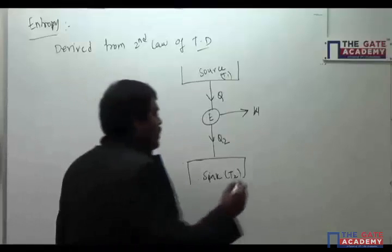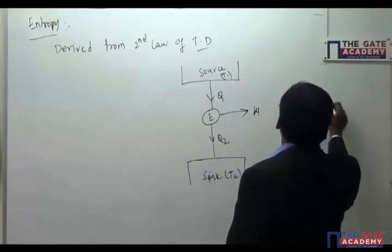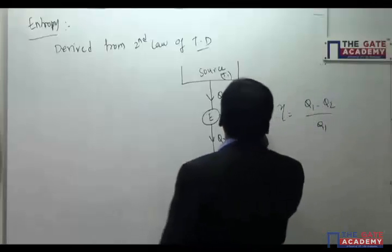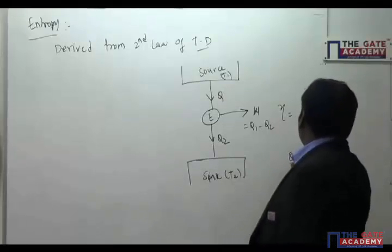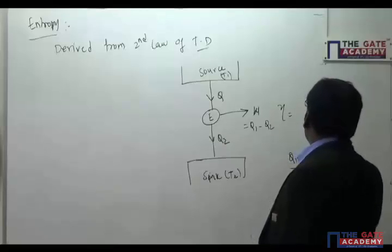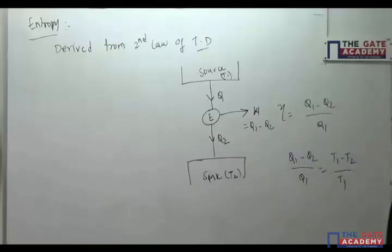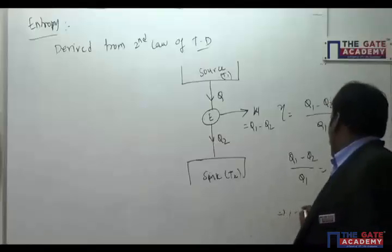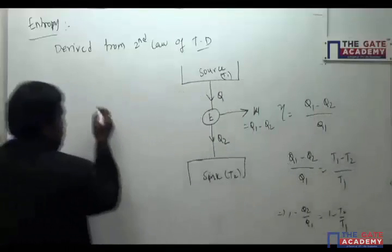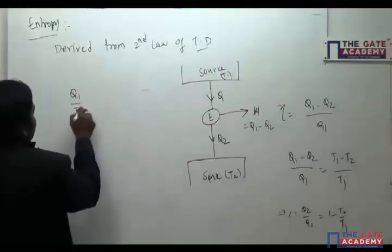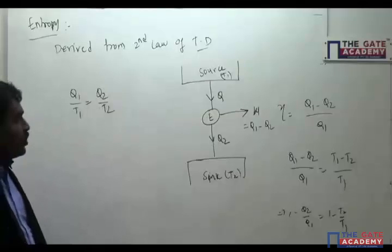The efficiency of the engine is equal to (Q1 minus Q2) by Q1, because W equals Q1 minus Q2. We also said Q1 and Q2 are properties of temperature, so efficiency equals (T1 minus T2) by T1. This gives us 1 minus Q2/Q1 equals 1 minus T2/T1, and therefore Q1/T1 equals Q2/T2.